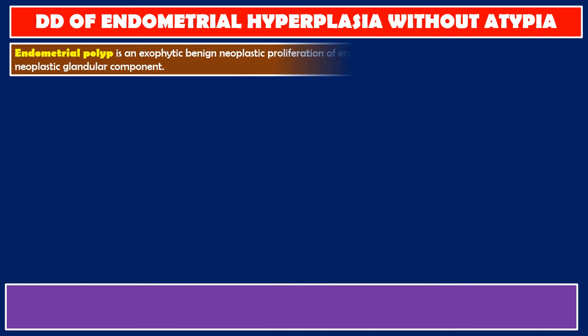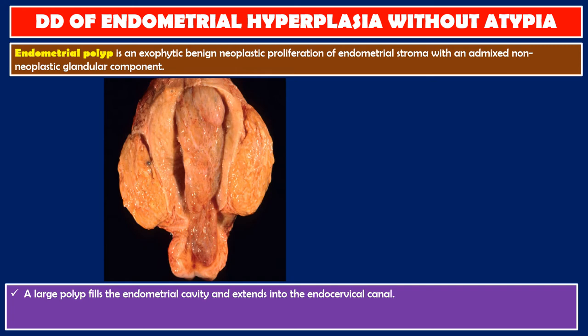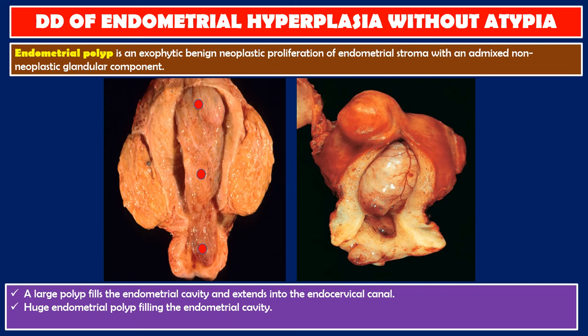Endometrial polyp is an exophytic benign neoplastic proliferation of endometrial stroma with an admixed non-neoplastic glandular component. Here in this photo, we see a large polyp filling the endometrial cavity and extending into the endocervical canal. Here we also see a smaller endocervical polyp and a subserosal leiomyoma.